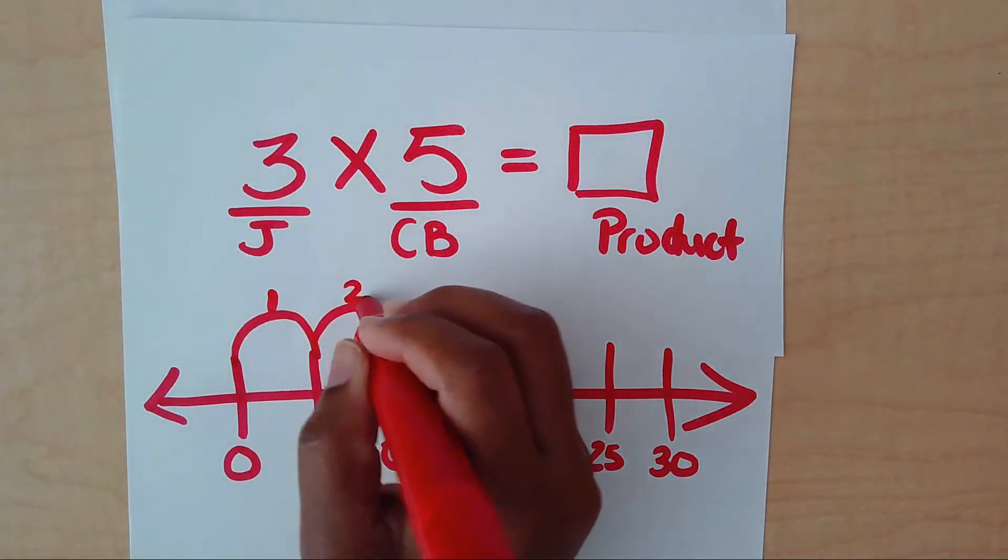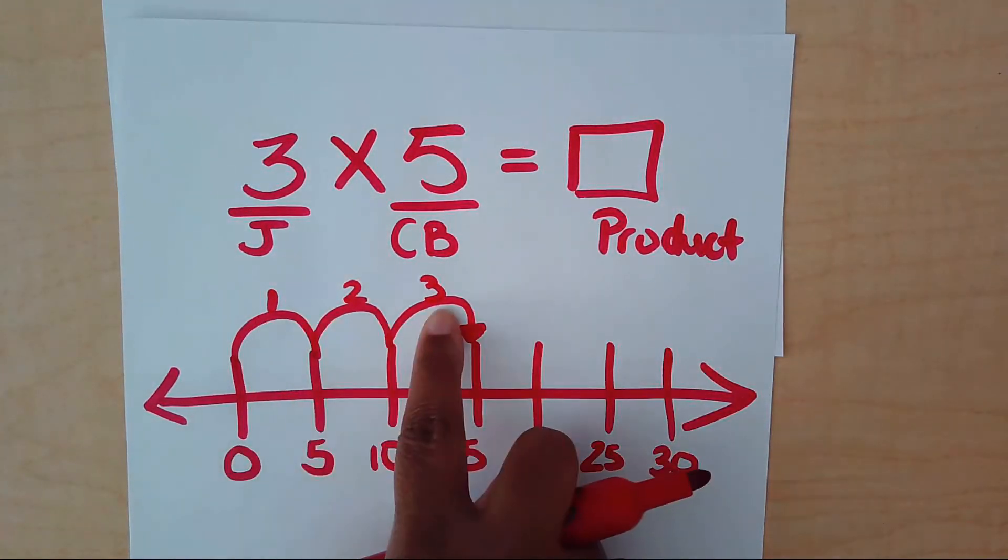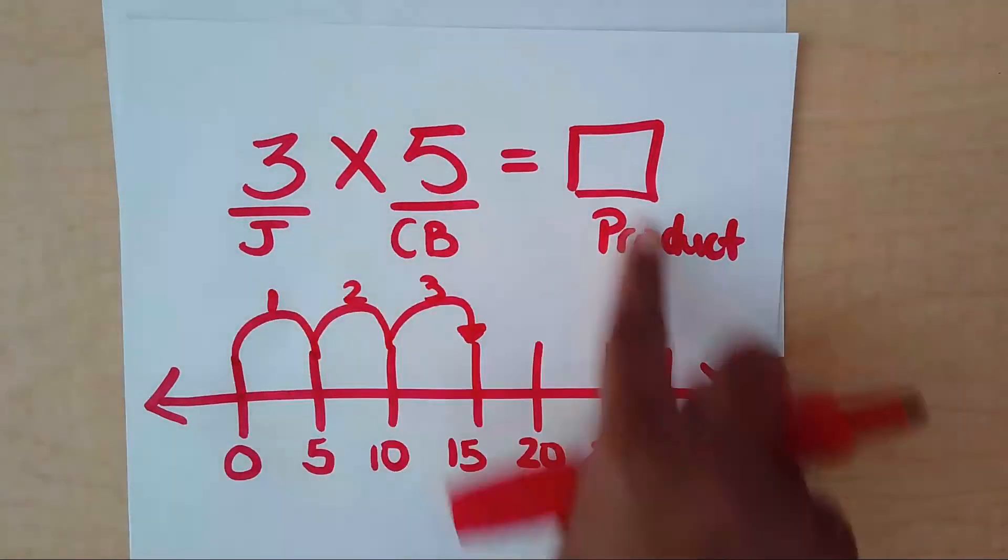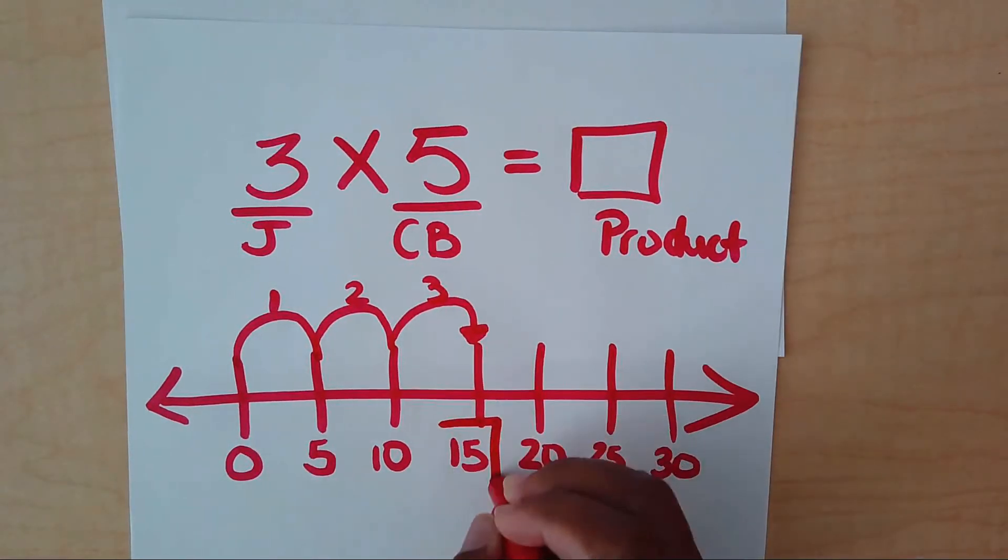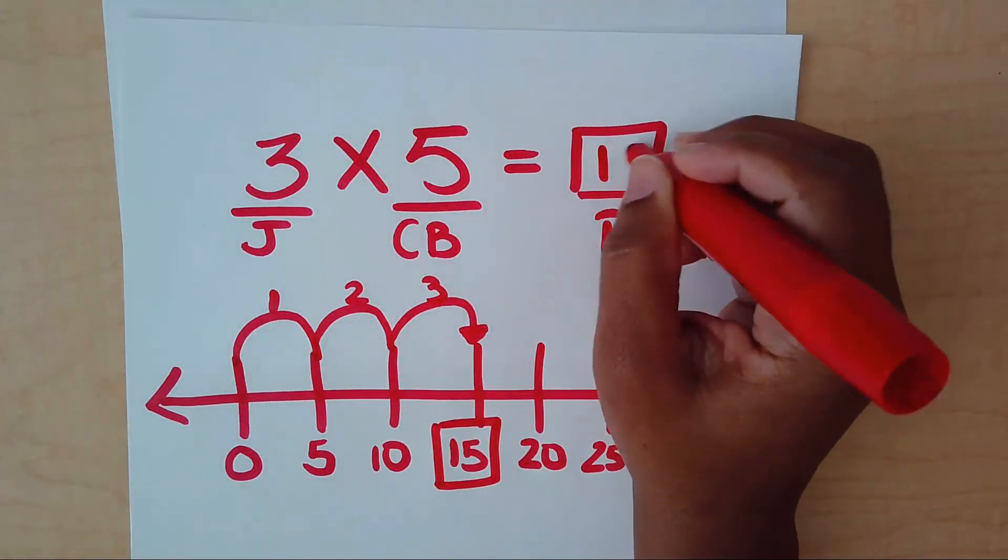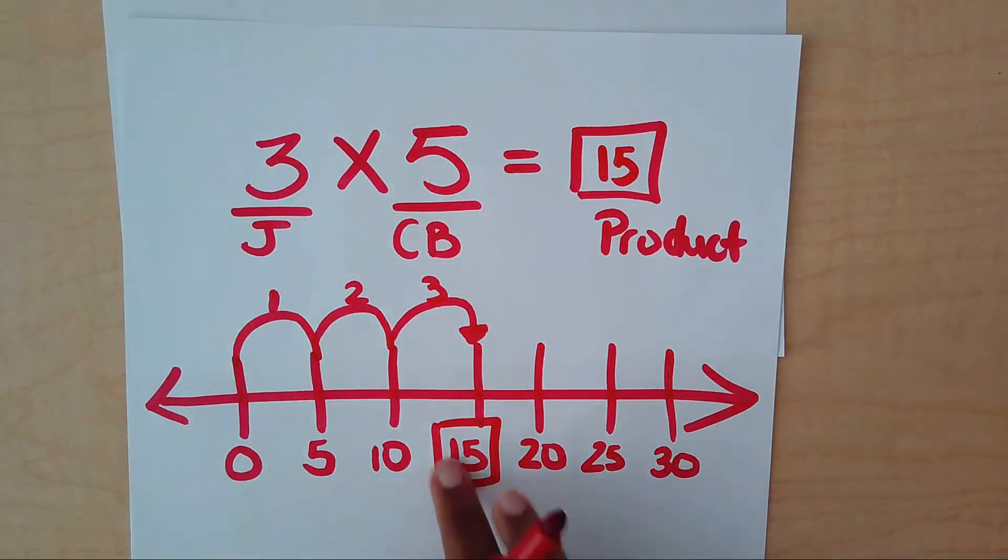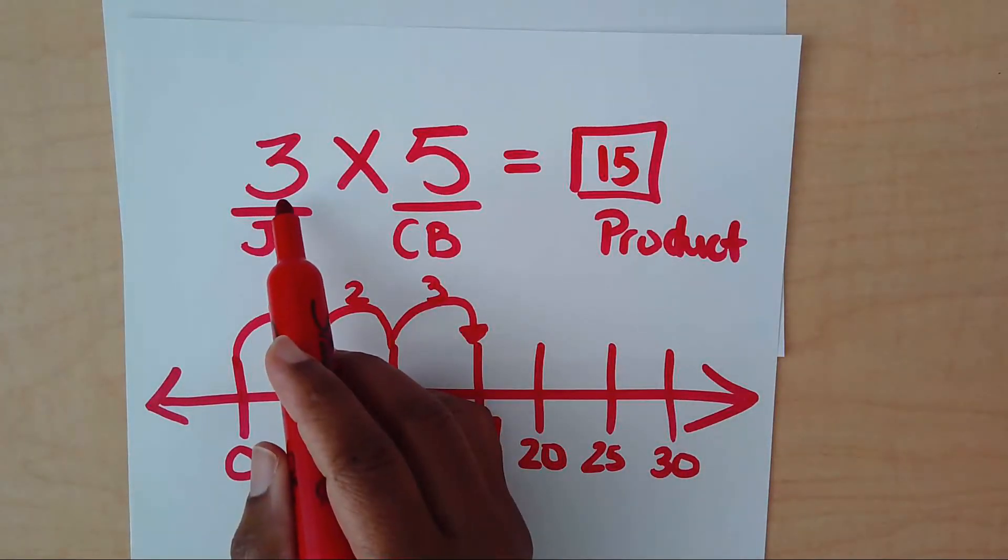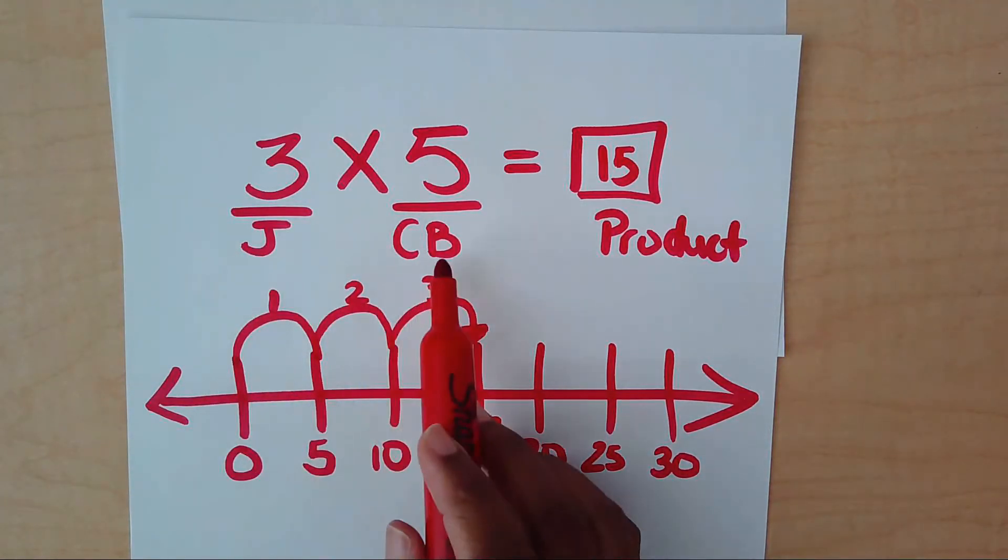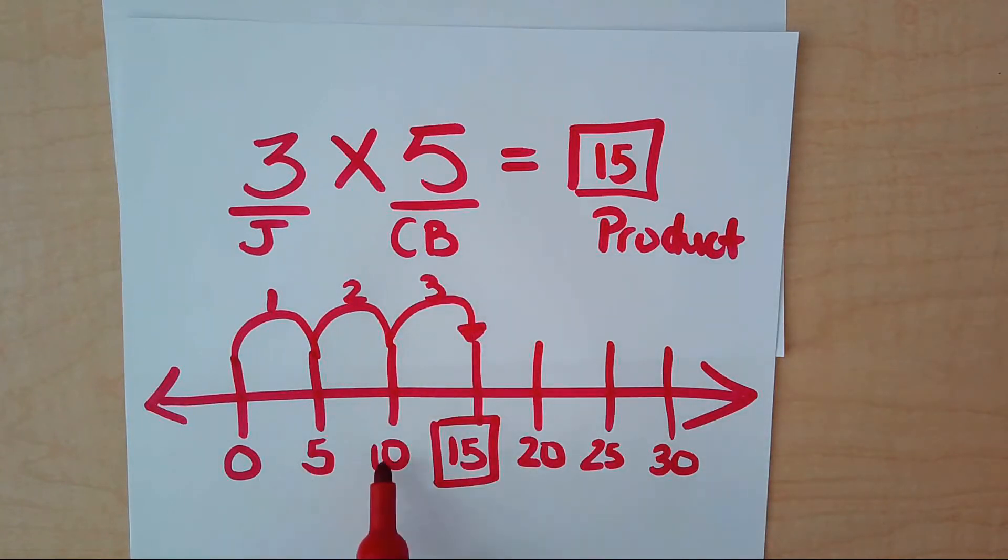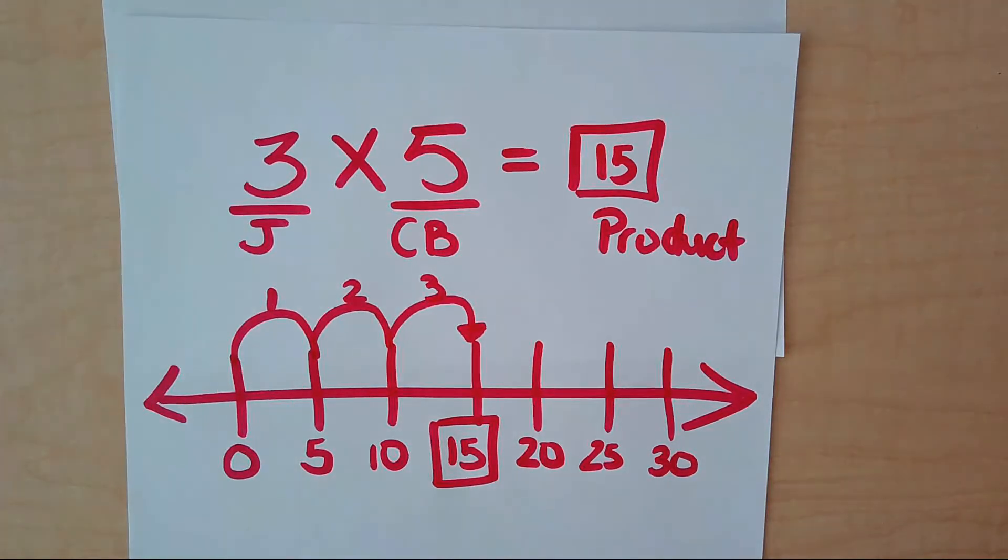I will not forget to label that I've jumped three times because when I've done all of this, I want to make sure I can point out every part of my problem. So where did I land? At 15. That means 15 is my product. It is the last number that was landed on. So where can I find my three jumps? One, two, three. Where can I find what I'm counting by? Right here. 5, 10, 15, 20, 25, 30. Where can I find my answer or the product? Right here. The last number that was landed on. Doesn't that seem pretty easy? I hope it does. I told you I plan on making it very easy for you.